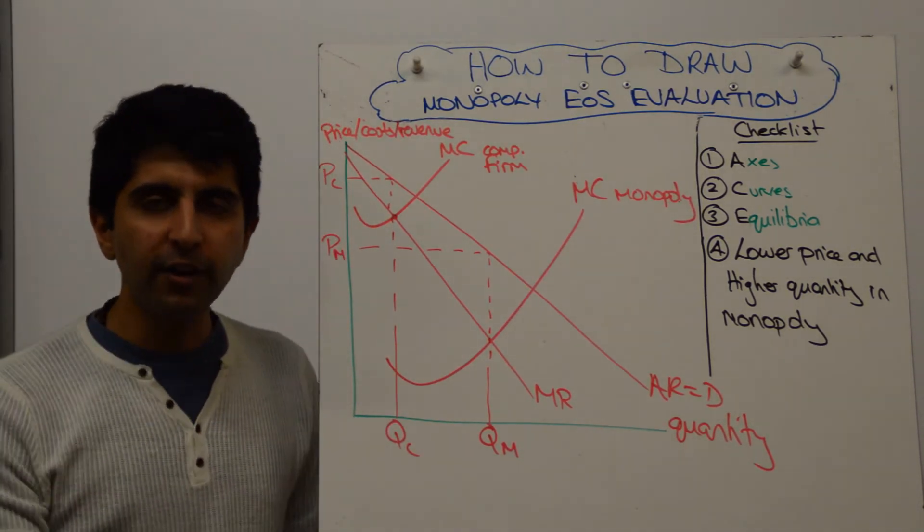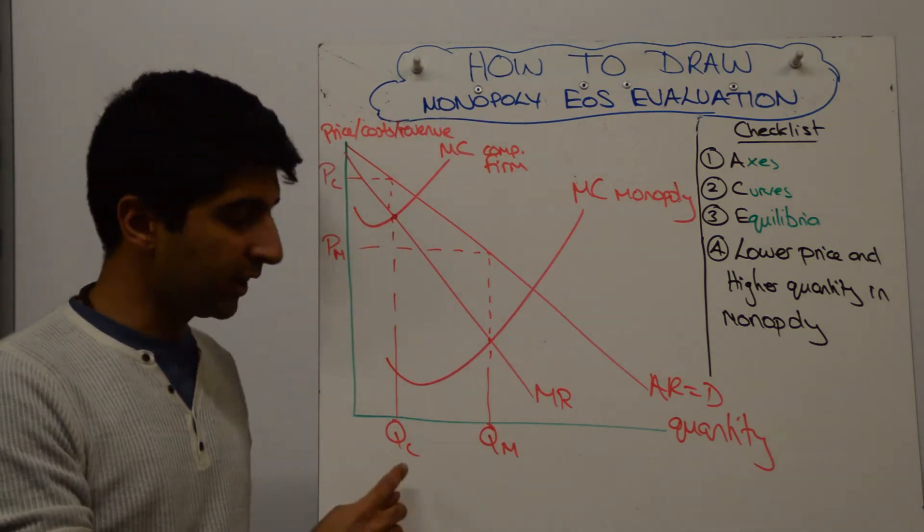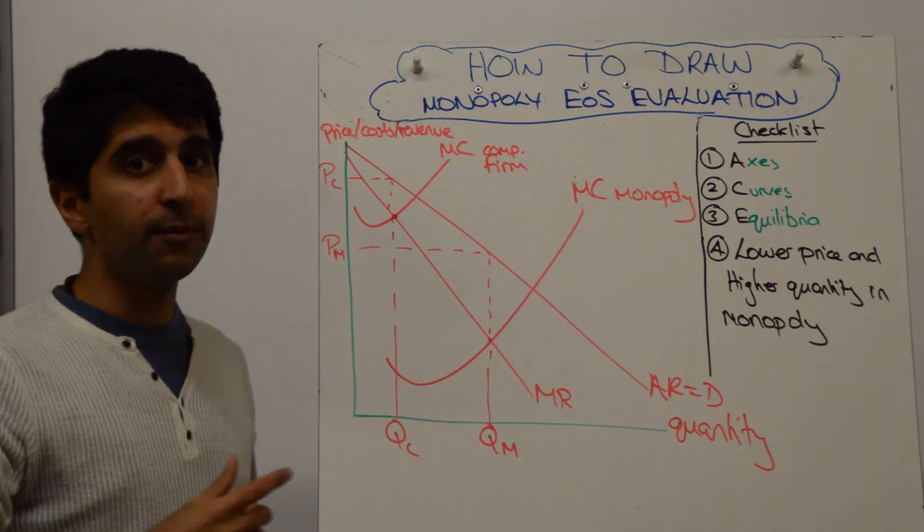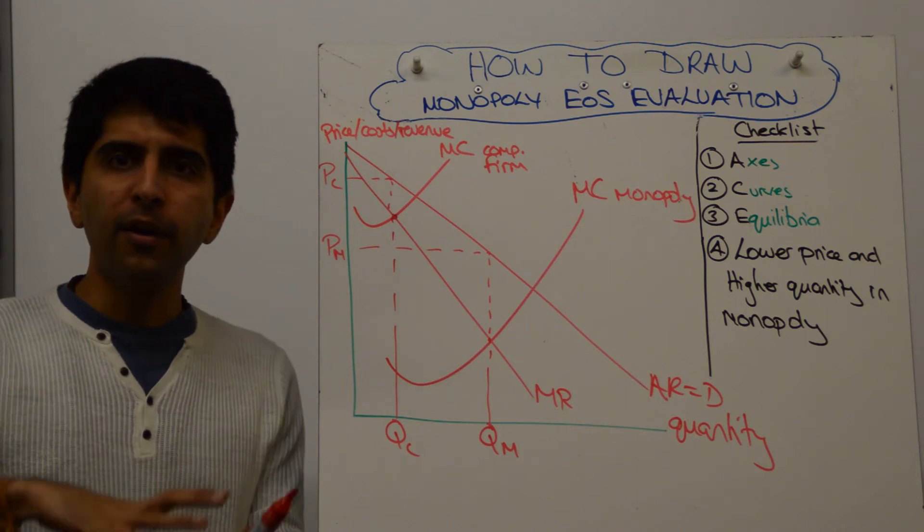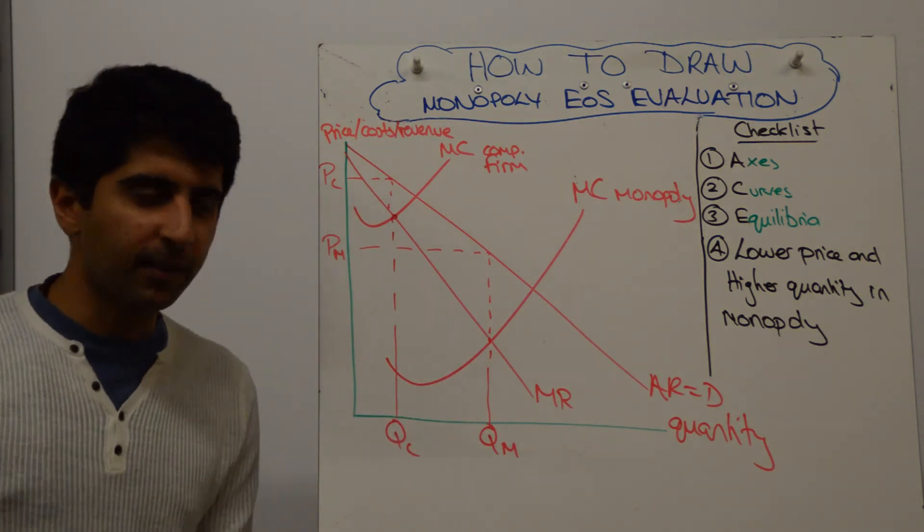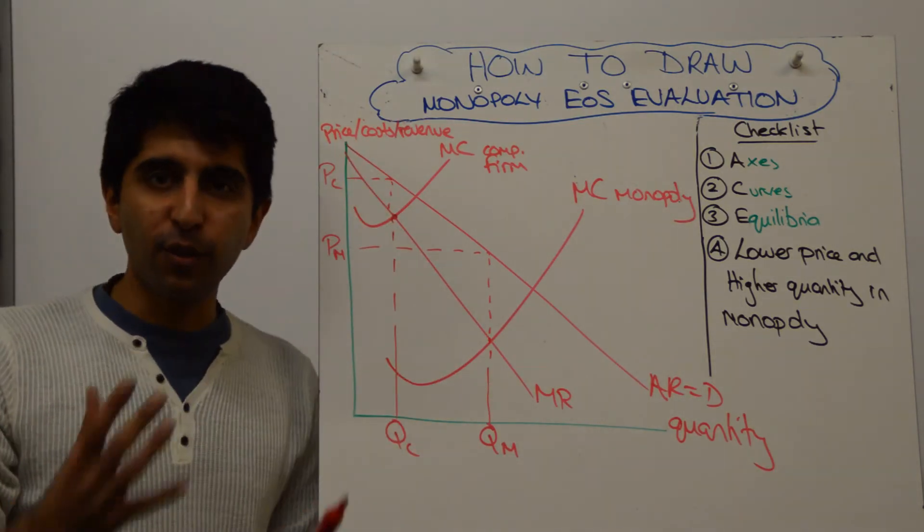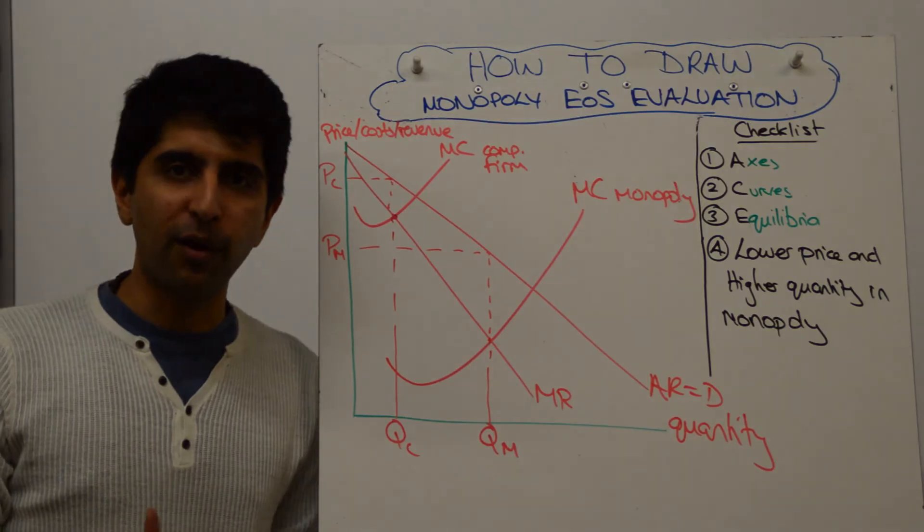Look at the outcome. We've reversed what we're used to seeing with monopolists. Where a higher quantity is being produced than a competitive firm, and a lower price is being charged than a competitive firm. Amazing evaluation diagram, right here. I know there are lots of assumptions here, there are lots of holes you can pick in the theory, but for the benefit of your essay, extremely powerful diagram.